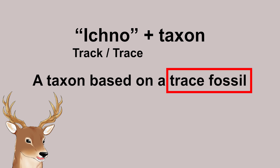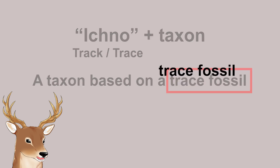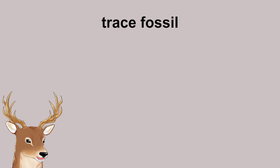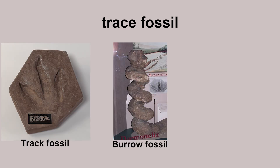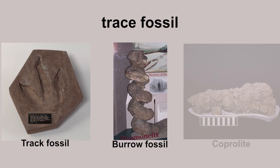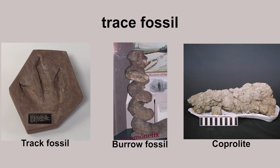What's a trace fossil, you might ask? Well, it's any fossilized trace of an organism. For animals, examples are tracks or footprints, burrows, and even coprolites — which are fossilized feces, also known as dung fossils.